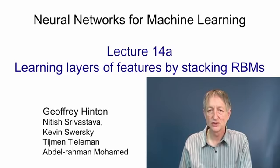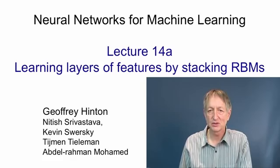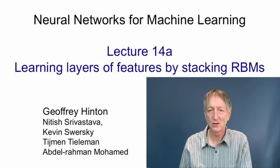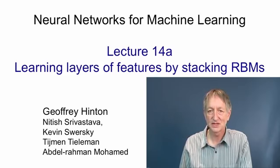The issue then arose: once you've stacked up lots of restricted Boltzmann machines, each of which is learned by modeling the patterns of feature activities produced by the previous Boltzmann machine, do you just have a set of separate restricted Boltzmann machines, or can they all be combined together into one model? Anybody sensible would expect you'd get a multi-layer Boltzmann machine. However, a brilliant graduate student of mine called Yi-Yi Tay figured out that that's not what you get — you actually get something that looks much more like a sigmoid belief net. This was a big surprise.